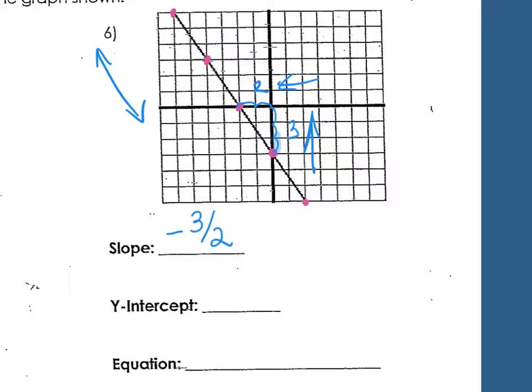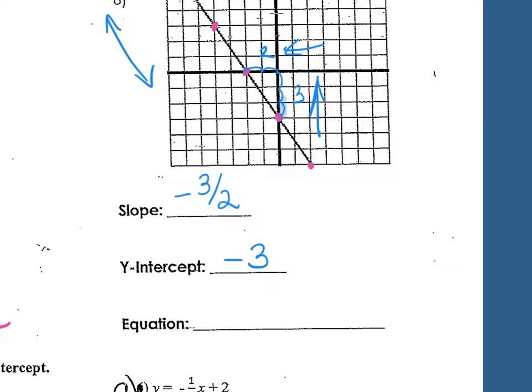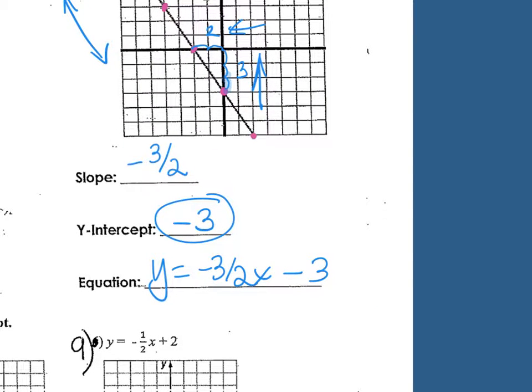Then what about the y-intercept? What's the y-intercept on that graph? Negative 3. So put it all together. Y equals negative 3 over 2x minus 3 because I had a y-intercept of negative 3.